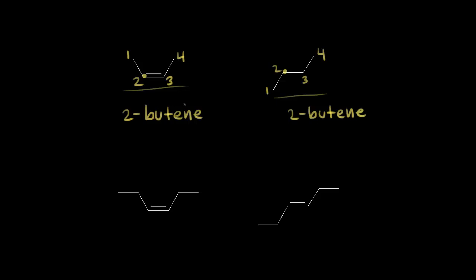The reason why they're different is because there's no free rotation around a double bond. Single bonds have free rotation, but double bonds don't. So you couldn't rotate the molecule on the left to look like the molecule on the right. Therefore, they must be isomers of each other, and we need a way to distinguish between them. One way to do that is to use cis-trans terminology.